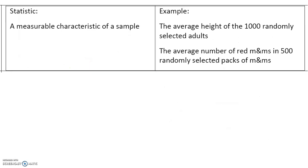A statistic is a measurable characteristic of a sample. Statistic and sample both start with an S; population and parameter both start with a P. So a measurable characteristic of a sample is a statistic. For example, the average height of 1,000 randomly selected adults is a statistic of a sample. The average number of red M&Ms in 500 randomly selected packs of M&Ms is also a statistic for that sample.